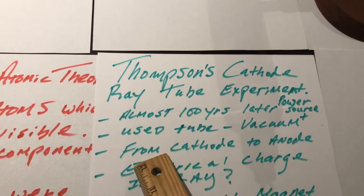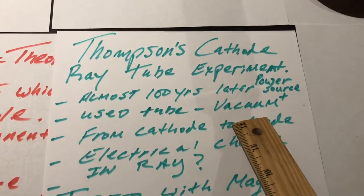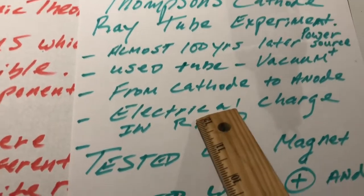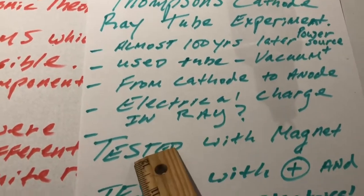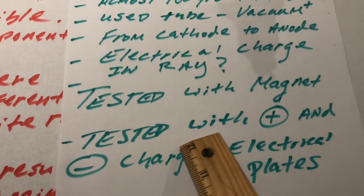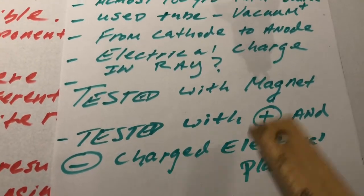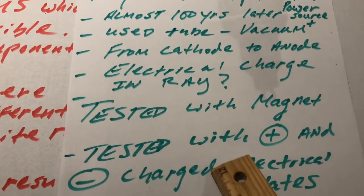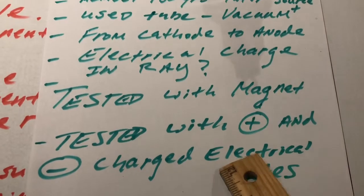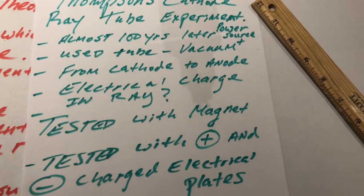Now, when he applied the energy or the electricity, it was from the cathode to the anode. Now, when he saw the ray, the question was, does this ray contain an electrical charge? So, he tested the ray with a magnet, and he also did tests with the ray in terms of having positive and negatively charged electrical plates. Now, we're going to discuss these things tomorrow in class in terms of the magnet and in terms of electrical plates and the results and what was the name of his model. But right now, what I want to do, I want to try and do the experiment.